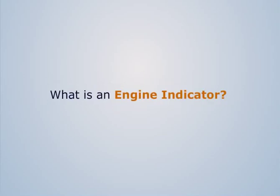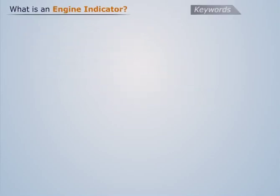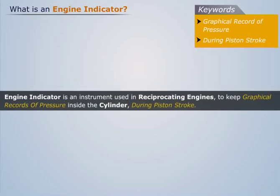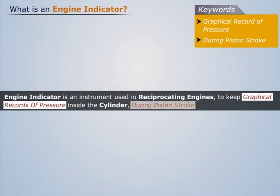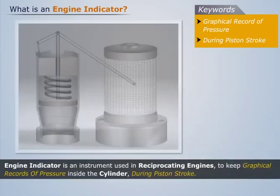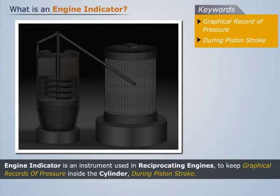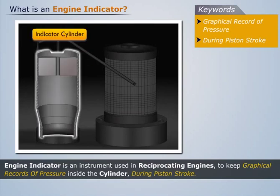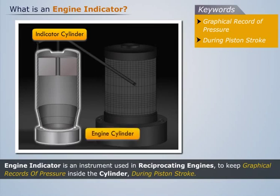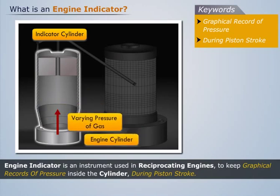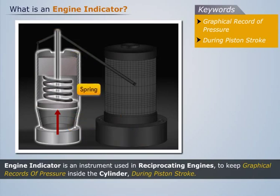What is an engine indicator? Engine indicator is an instrument used in reciprocating engines to keep graphical records of pressure inside the cylinder during piston stroke. A typical engine indicator consists of an indicator cylinder with a piston. The indicator cylinder is connected to the engine cylinder. The varying pressure of gas in the engine cylinder is communicated to the indicated piston, whose displacement is constrained by a spring.